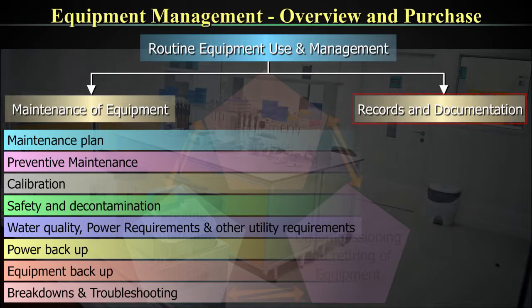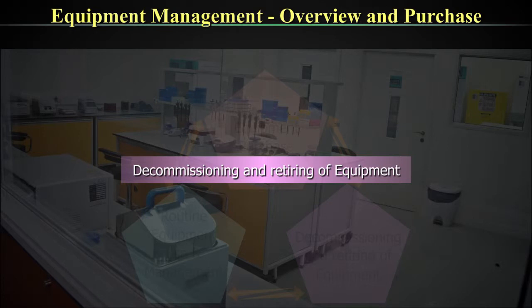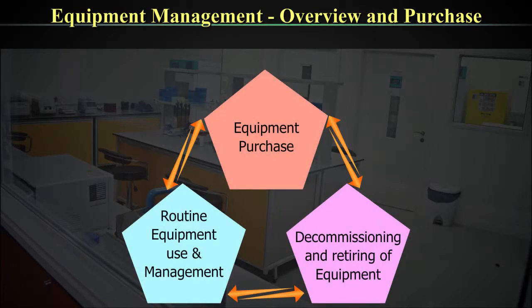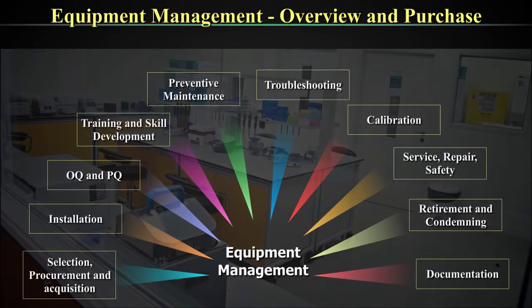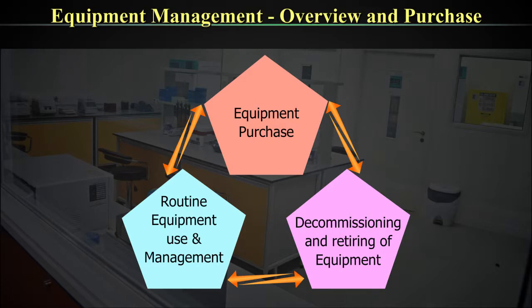Records and documentation of equipment is a very important aspect, to be covered in a subsequent video. Decommissioning and retiring of equipment is another aspect we will look into further. The life cycle of equipment can broadly be classified as purchase, routine use, and decommissioning — under which there are multiple sub-components.